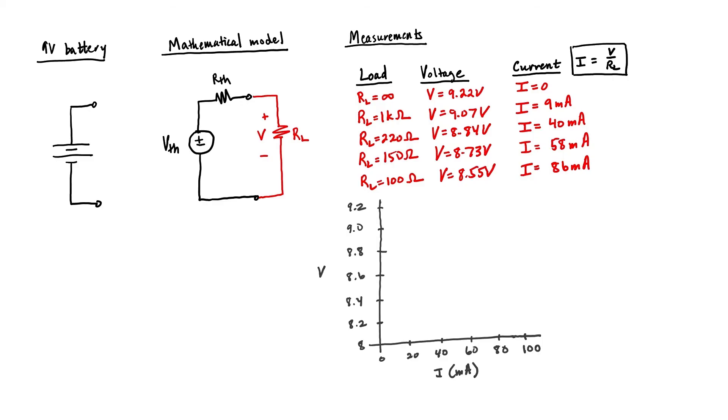Now that we have the current and voltage that was flowing out of the battery, let's make a plot of voltage versus current for this particular battery. First of all, when we measured the open circuit voltage, no current was flowing.